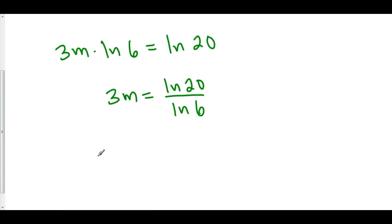And of course, we can divide by 3. And so m is equal to the natural log of 20 over 3 times the natural log of 6. And we have solved for m.